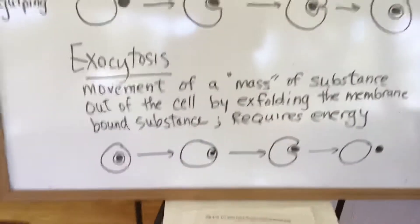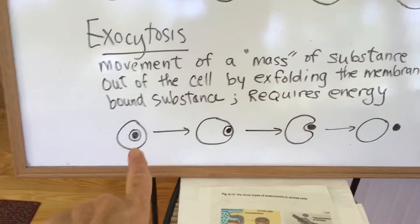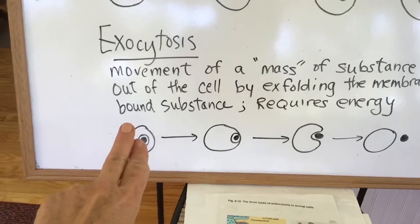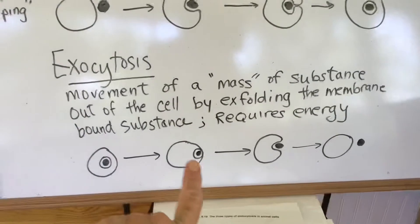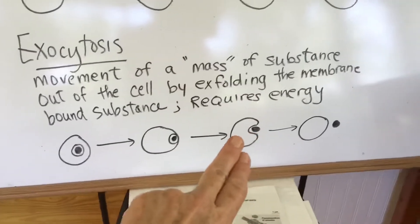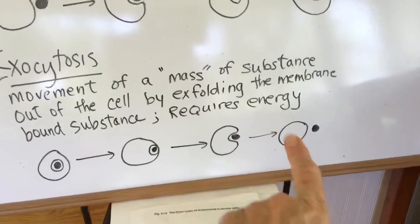Exocytosis is just the reverse. So this would be the cell is making something or maybe it has a byproduct that it doesn't actually want, some kind of metabolite that it's not using. And it can take it to the edge of the cell and again because the membranes can coalesce with each other, it can just dump it out of the cell.